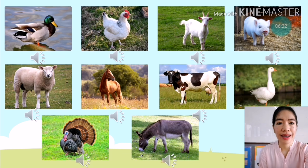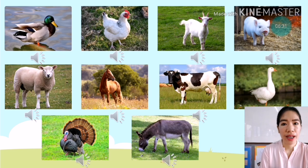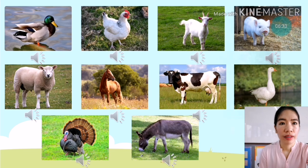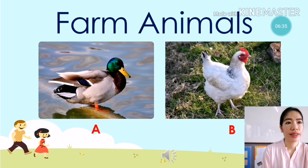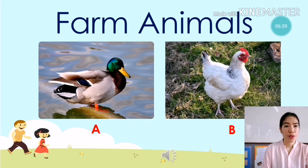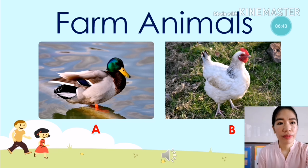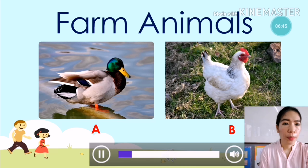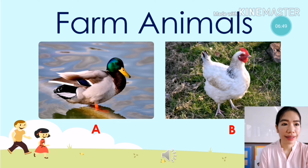Very good! So let's have an activity — farm animals. I'm going to play the sound of the animal, then you're going to guess what animal it is. What animal is it? Is it A, cat, or B, hen? My answer is B, hen. Is it correct? Yes, it's correct!